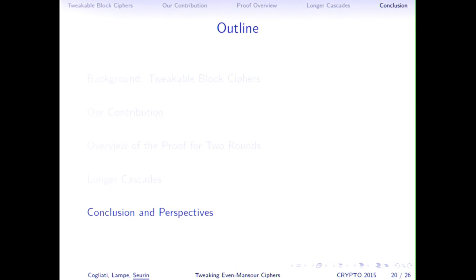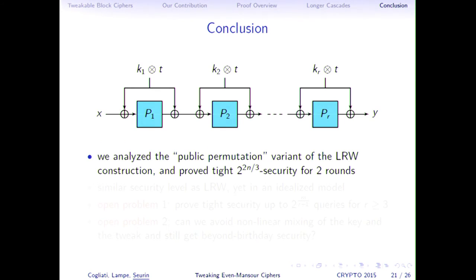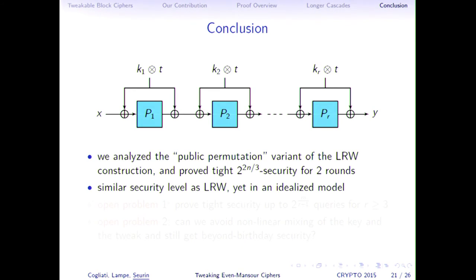To conclude: in this work we analyzed the public-permutation variant of the LRW construction. In particular, we proved tight 2^(2n/3) security for 2 rounds. We achieve a similar security level to the LRW construction, but we use an idealized model that only gives heuristic security. For LRW, no idealized model is needed — it only requires assuming the underlying block cipher is a good PRP.